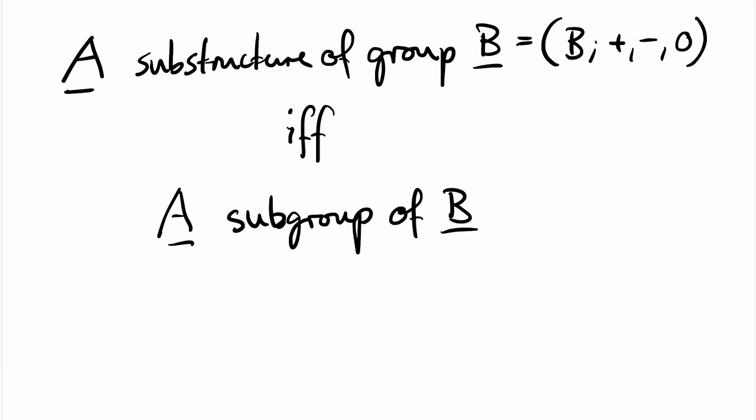Since we have a constant symbol for the identity in our signature, every substructure of B must contain the identity of B. Since we have a unary operation symbol for the inverses, every substructure of B must contain for every element x also minus x.